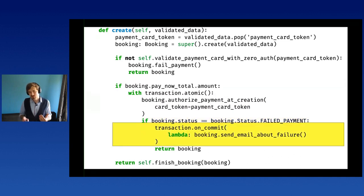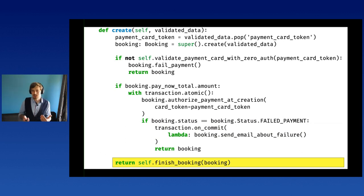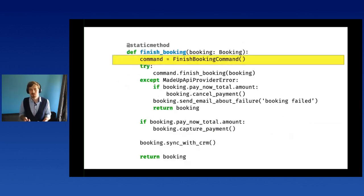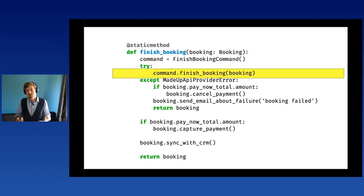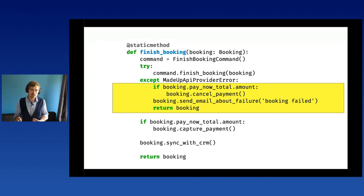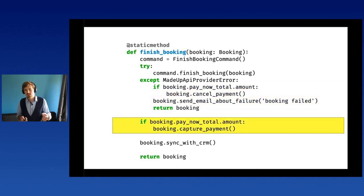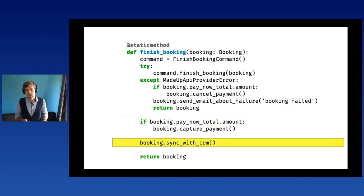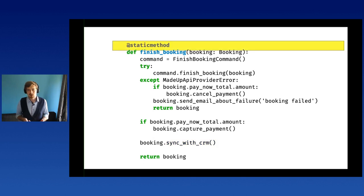Then there's a transaction where we try to authorize payment again using the booking object. If it fails, we send an email about the failure. Then control moves to a mysteriously named function: 'finish_booking'. Inside, it instantiates a class called FinishBookingCommand, which has a method also called 'finish_booking'. There's error handling: if the booking itself fails, we undo the payment and send an email. If we authorized money in advance, we capture it — meaning we actually take the money — and finally we sync the booking with the CRM.